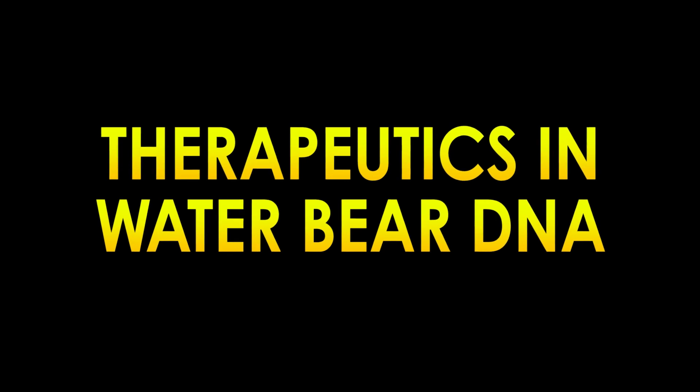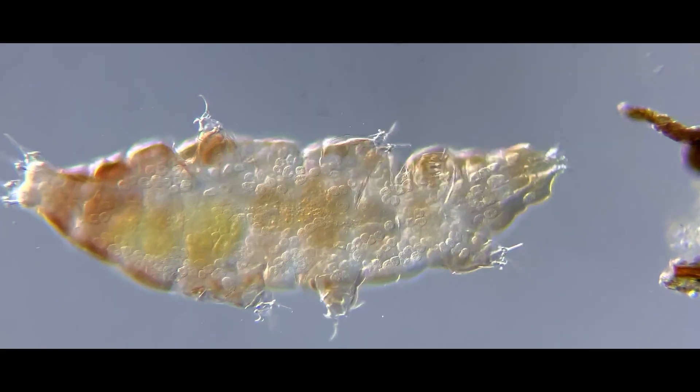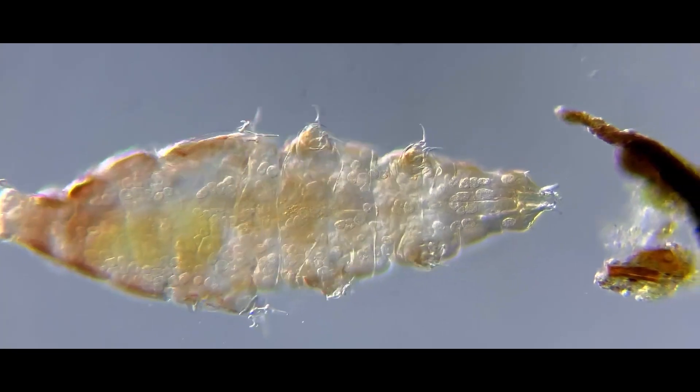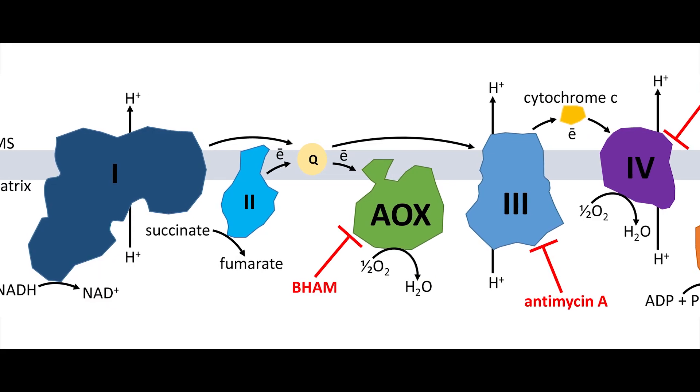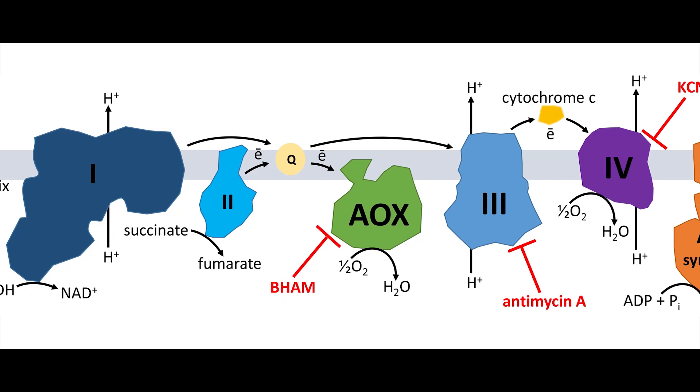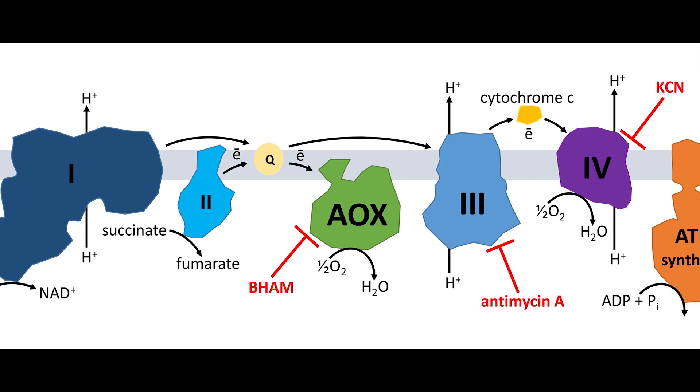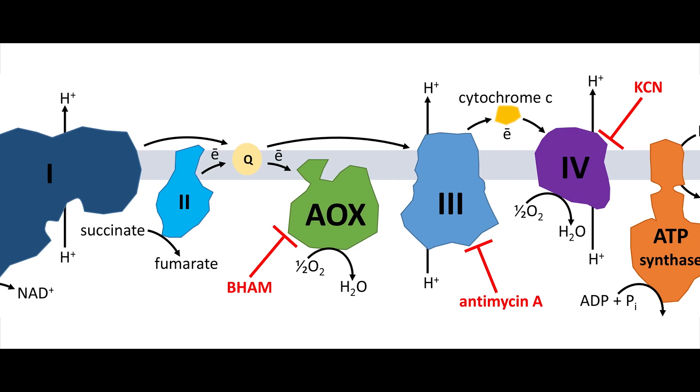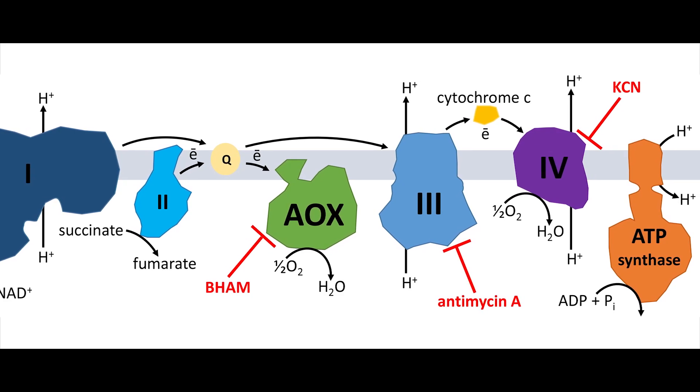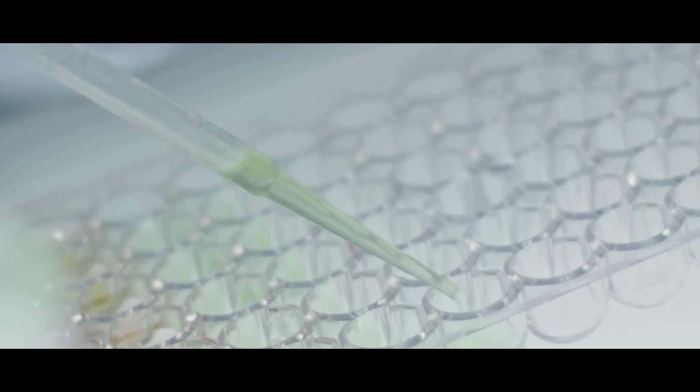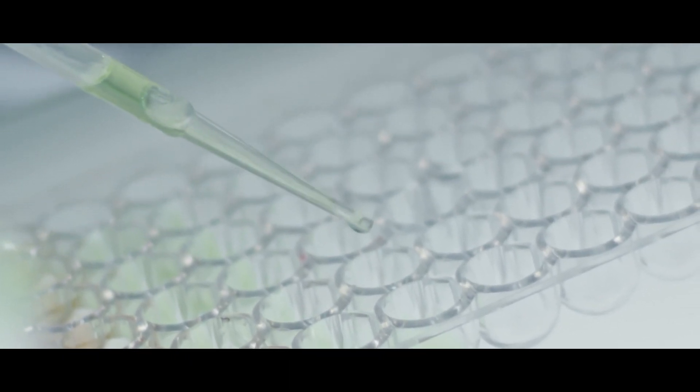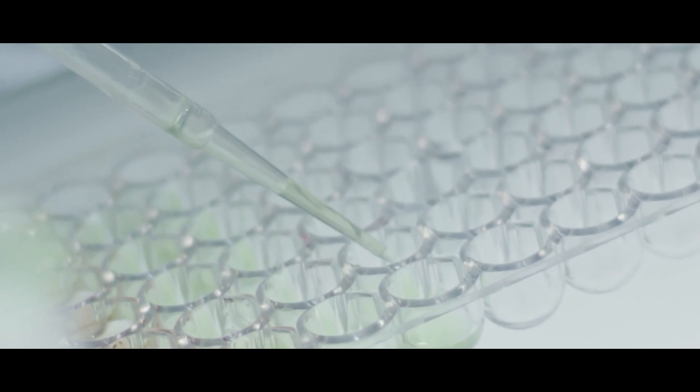Therapeutics in water bear DNA. There's a special kind of juice that exists naturally in the mitochondria of some invertebrate animals. That juice is mitochondrial alternative oxidase. The stuff, when inserted into our mitochondria, is a potential therapeutic. Any research into finding a way to produce it in other animals is medically important. A team of scientists found the AOX stuff in tardigrades in 2021.